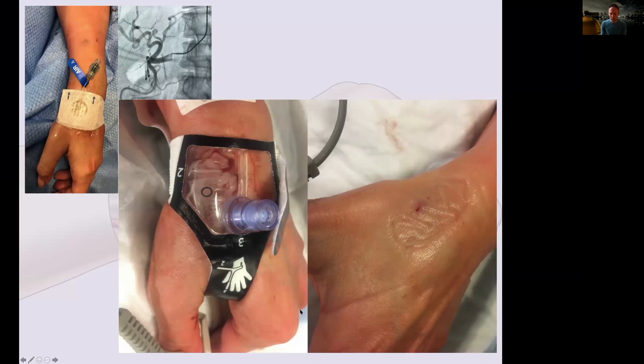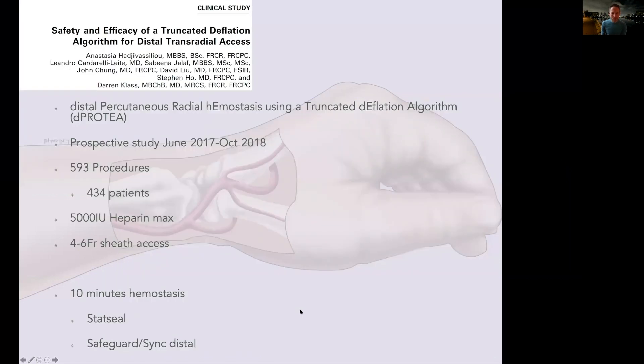This is our rapid hemostasis study that was published in JVIR, called DPROTEA. It's a prospective study, June 2017 to October 2018, almost 600 procedures performed, 5,000 units of heparin and up to a six French sheath, 10 minutes of hemostasis using either a Safeguard or Synk Distal with a StatSeal.